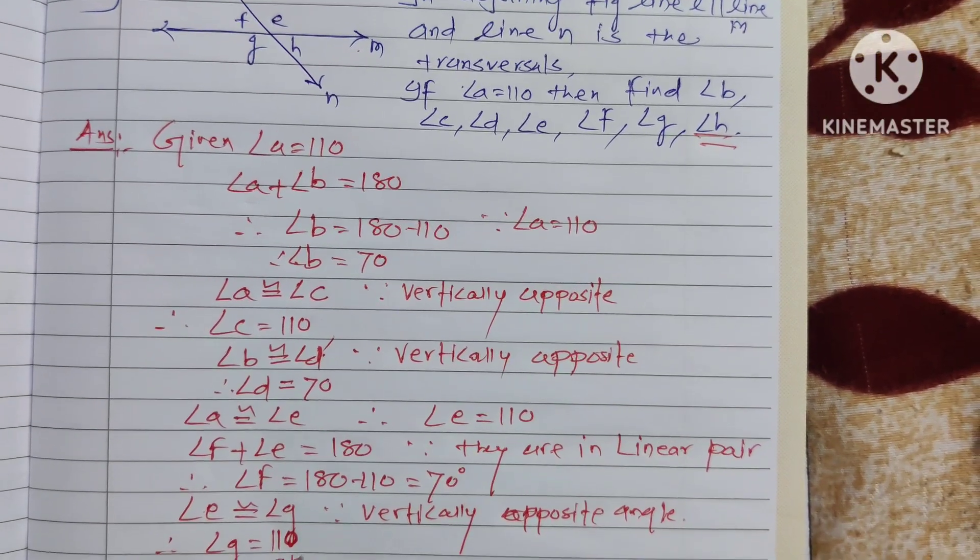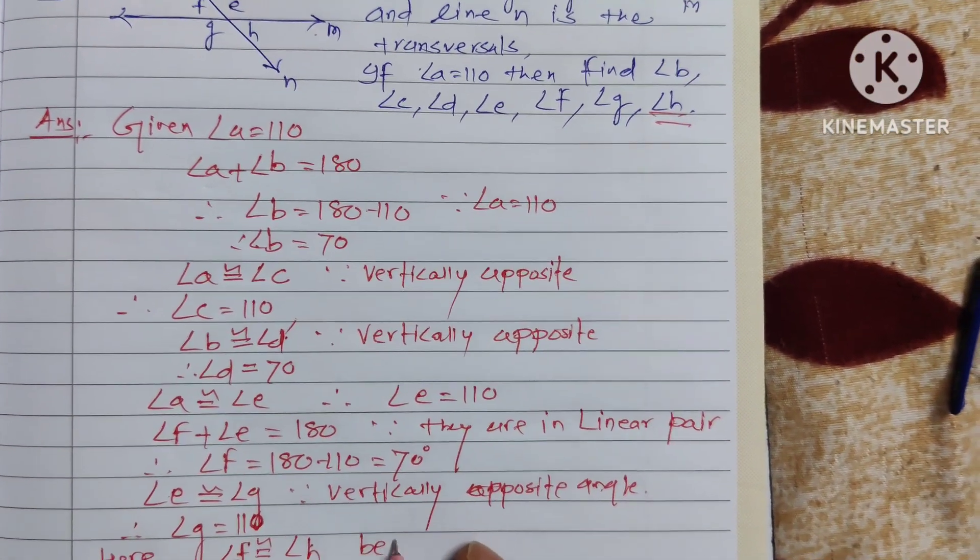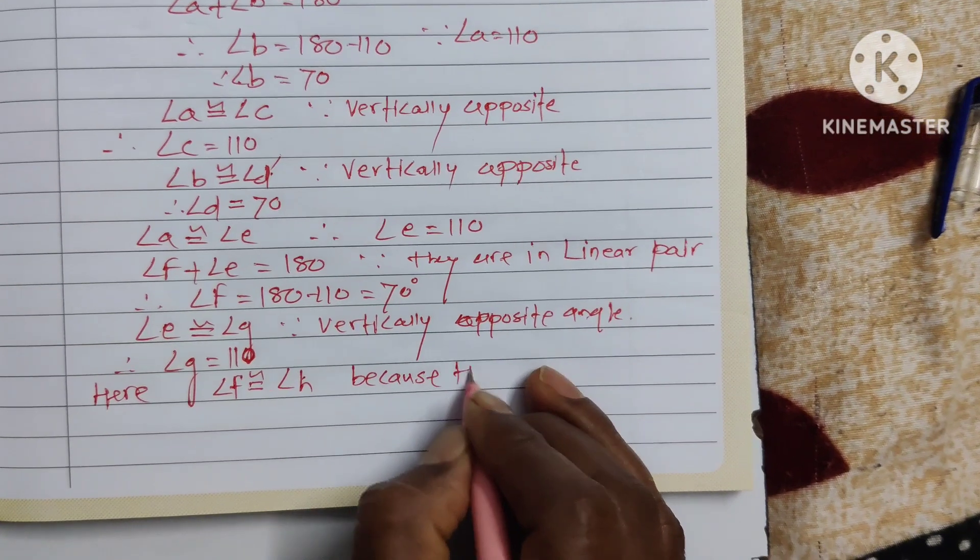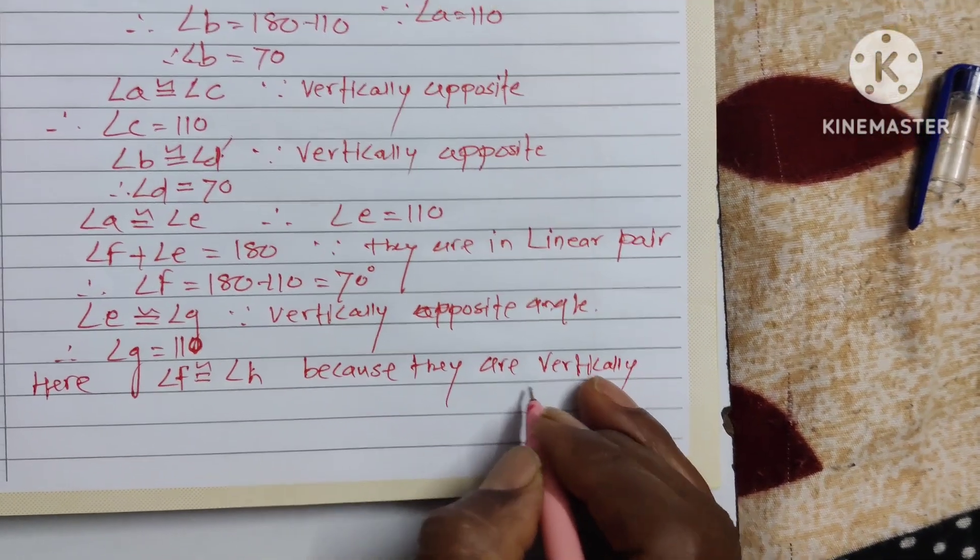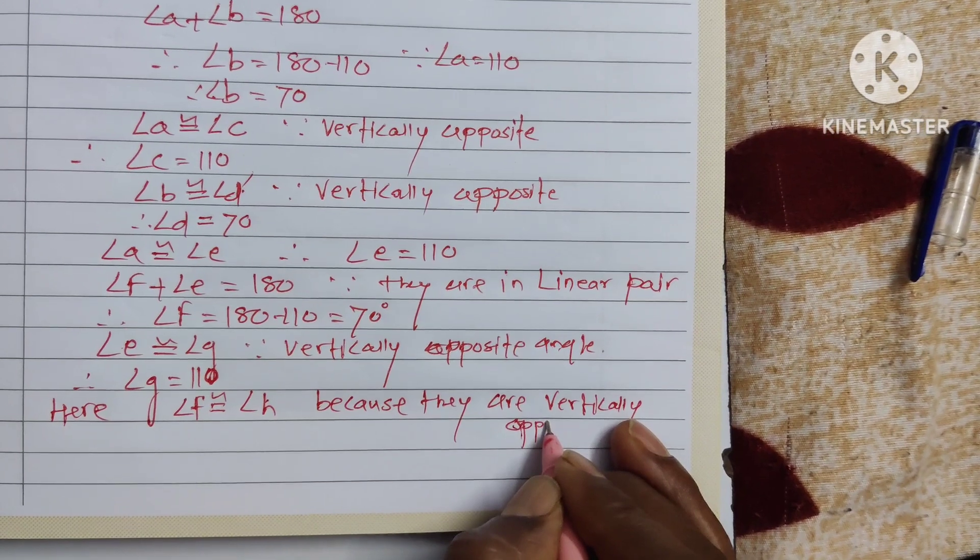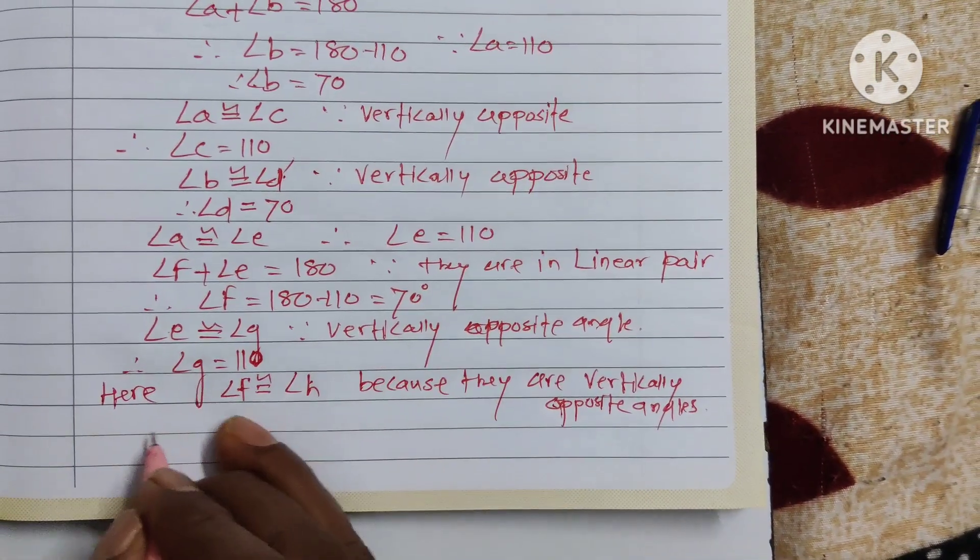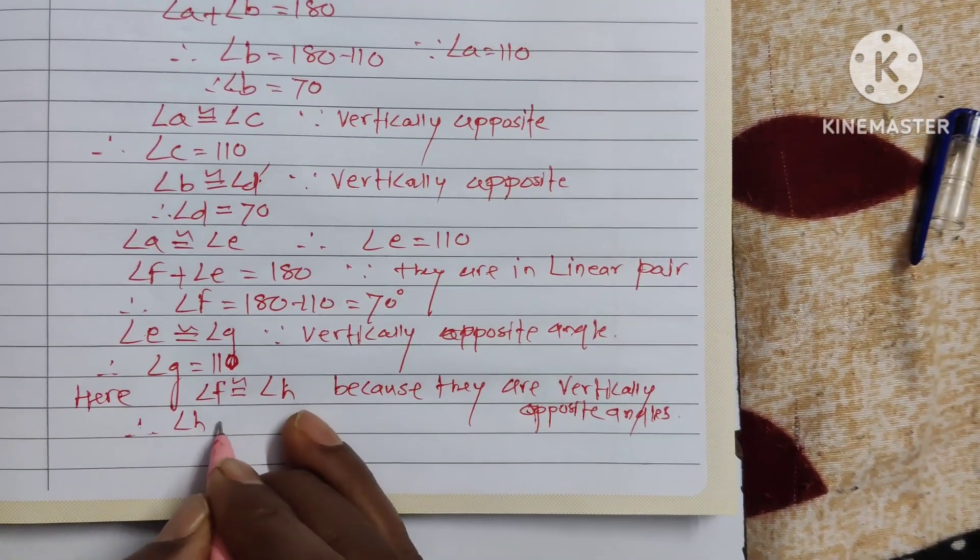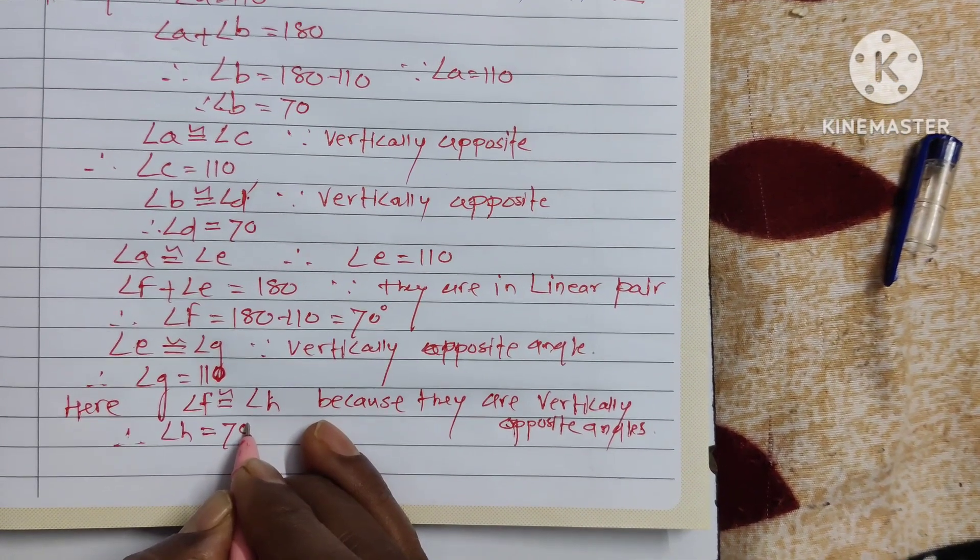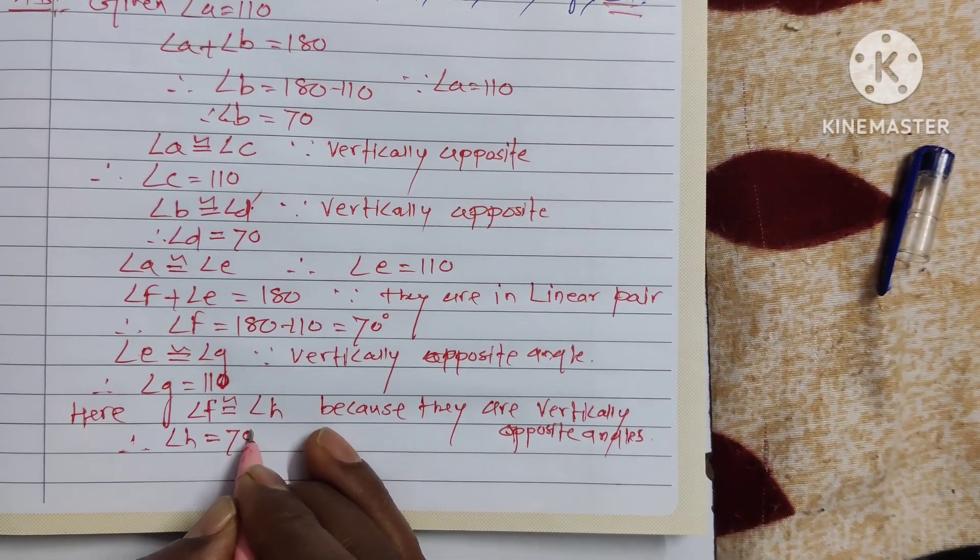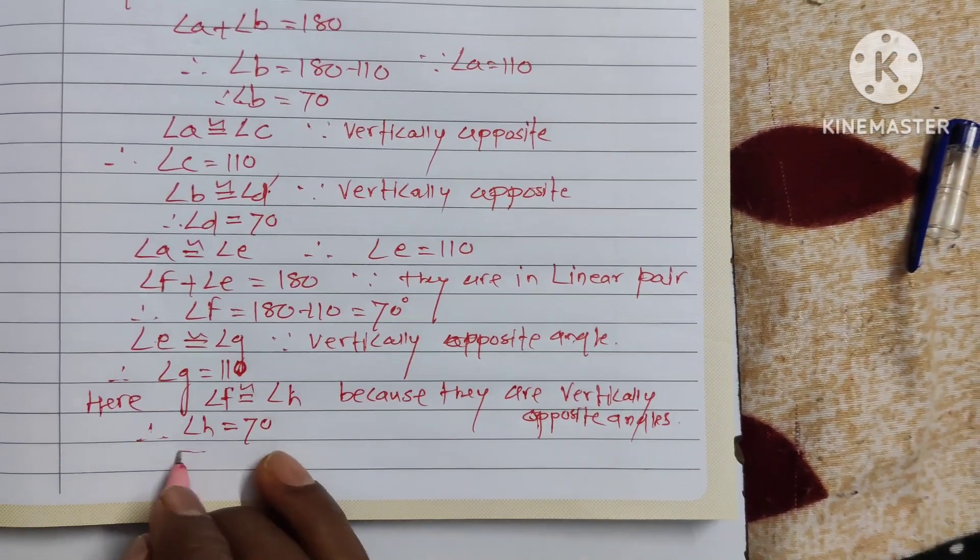Now lastly find out angle h. F and h are vertically opposite. Here angle f congruent angle h because they are vertically opposite angles. Therefore angle h equal to 70.